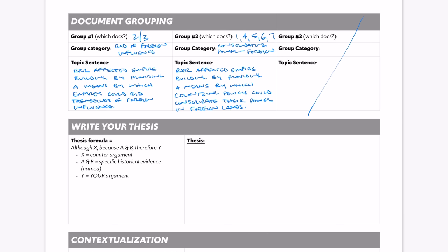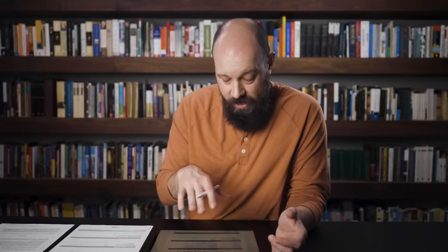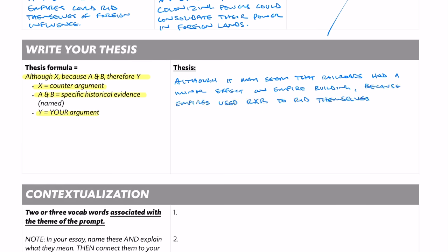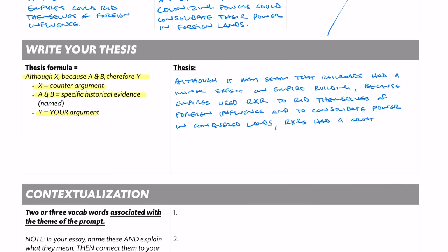Now we've done a ton of work and we're ready to write the thesis. Remember the thesis formula: 'Although X, because A and B, therefore Y.' X is your counter argument, A and B is specific historical evidence that you name, and Y is your argument. This is more than you need to get the point, but it sets you up for a complex essay that has a chance at earning the complexity point. The thesis I came up with is: 'Although it may seem that railroads had a minor effect on empire building, because empires used railroads to rid themselves of foreign influence and to consolidate power in conquered lands, railroads had a great effect on empire building between 1860 and 1918.' Not elegant, but it gets the job done and will certainly get the point.